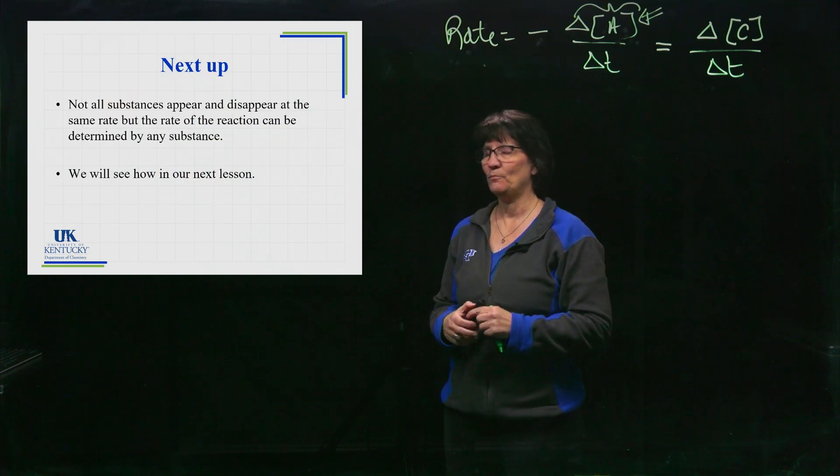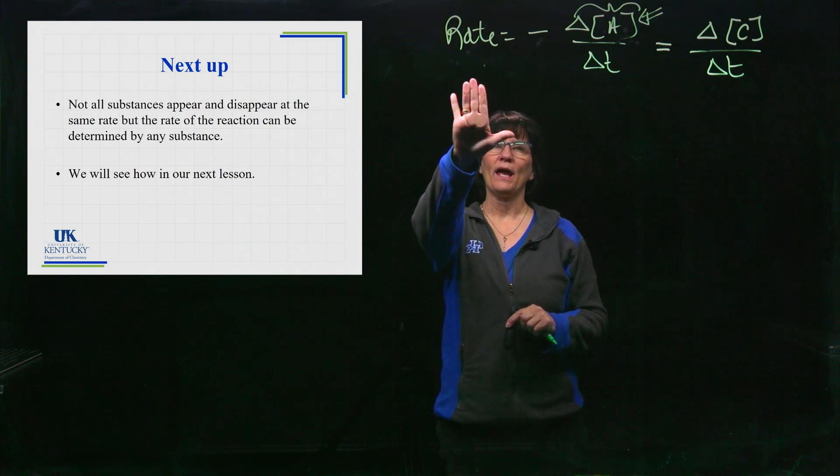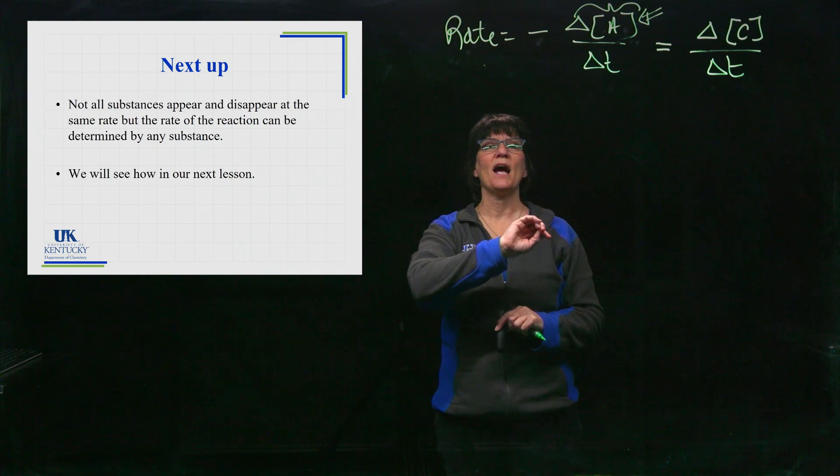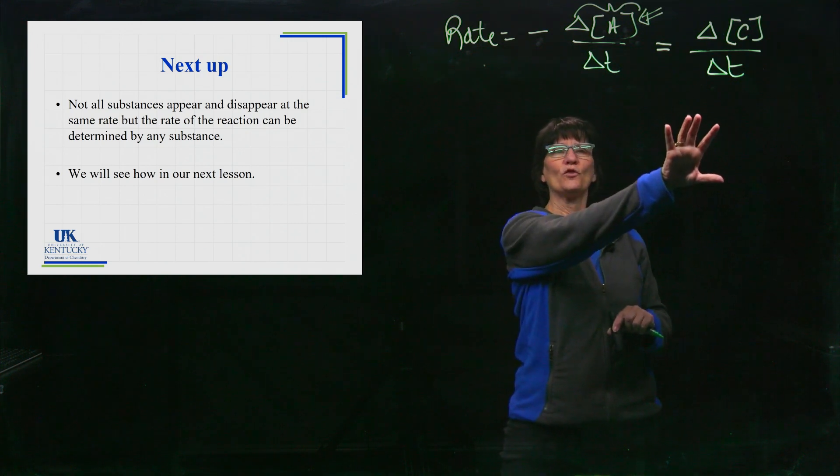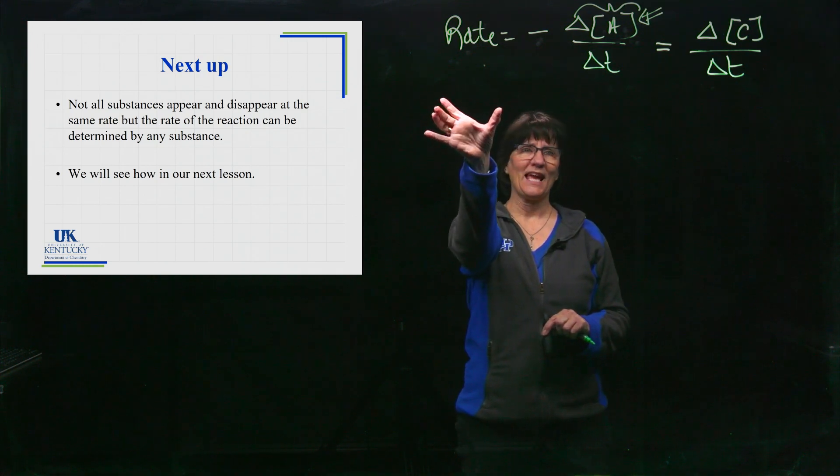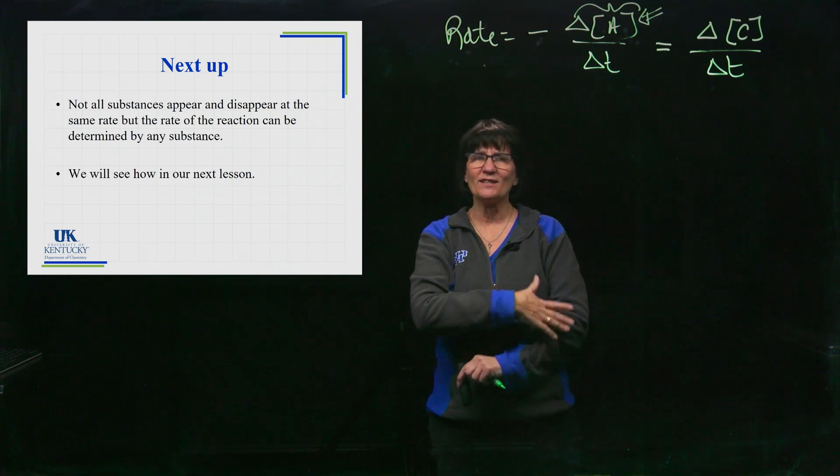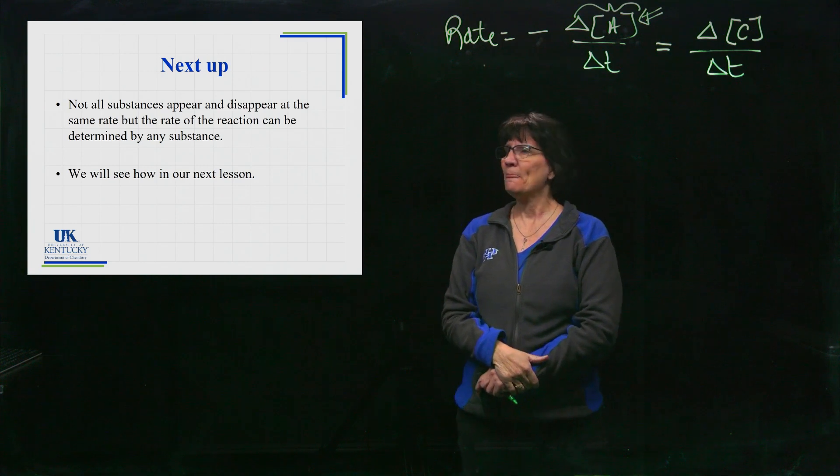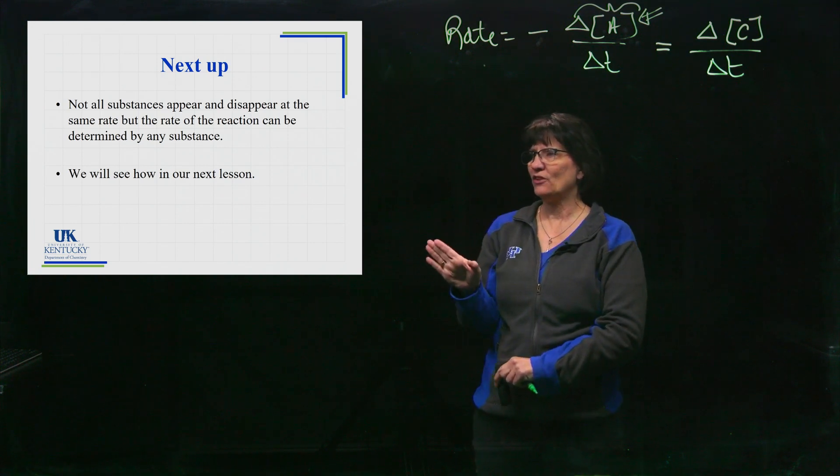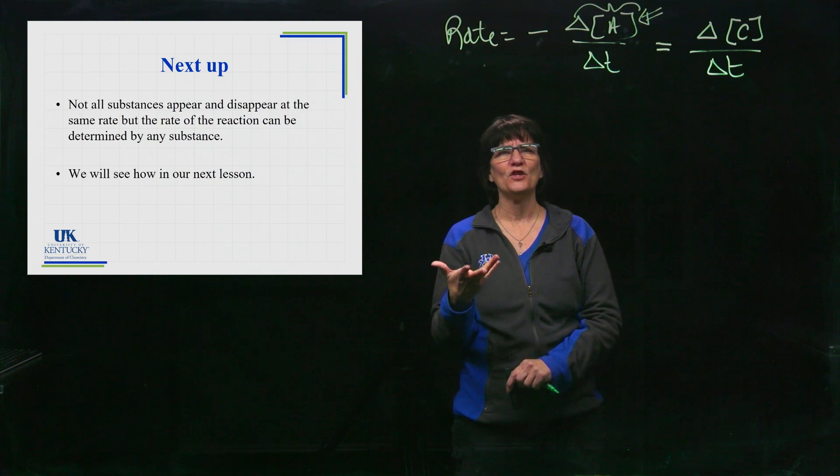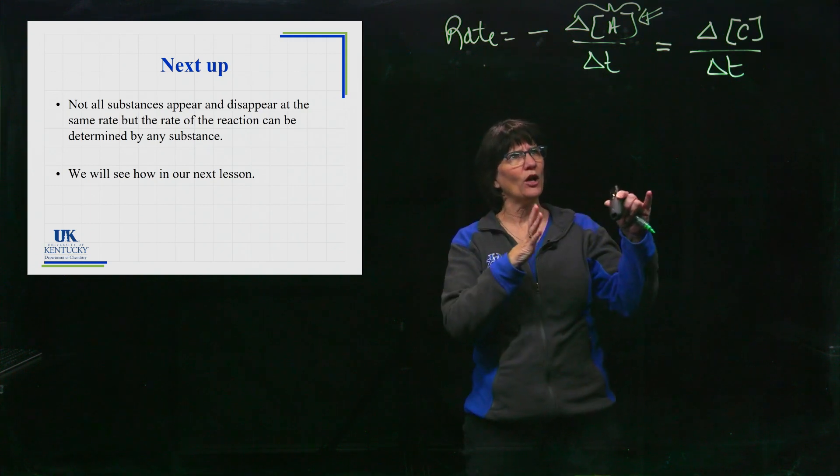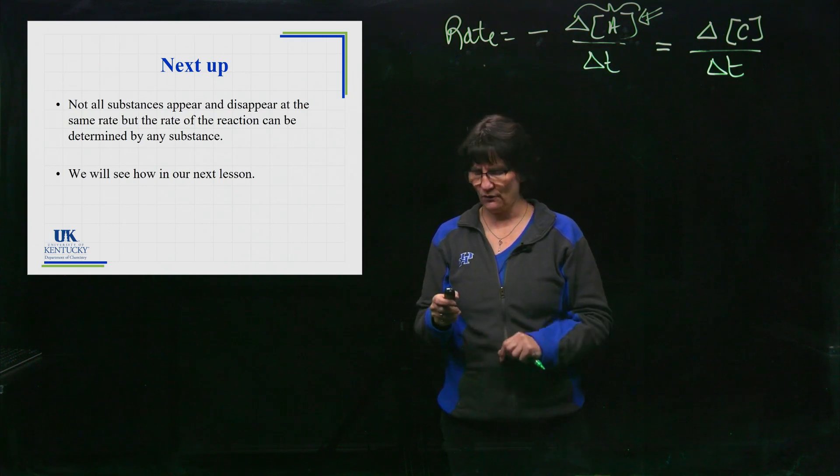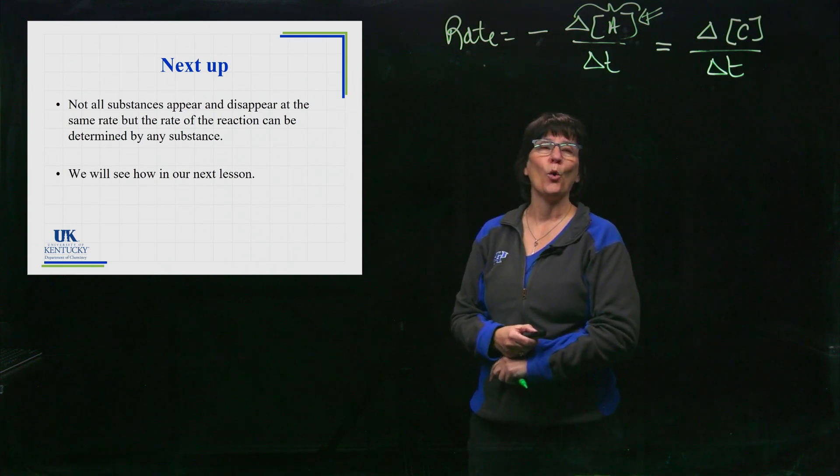Okay, so this is defining rate. We know that we can monitor change in concentration with respect to time for reactants, we can do it for products, we need to be able to get the same rate of reaction. We know the reaction rate doesn't typically stay constant, it slows down as time goes by. And what we're going to look at next is what we do if there are coefficients involved in our reaction. How are we going to play that out if there's a two coefficient or a three coefficient in a reactant or a product?